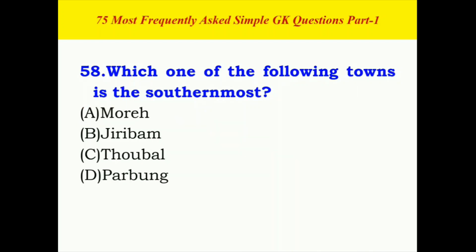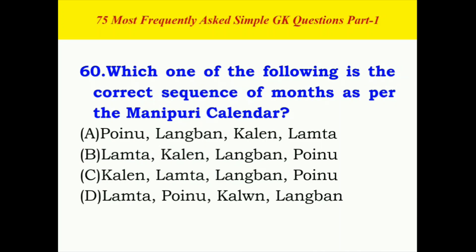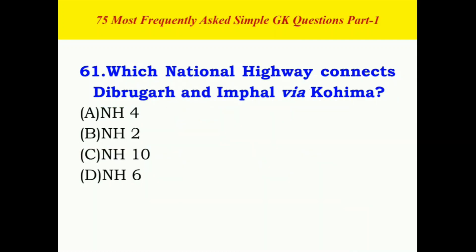Which one of the following towns is the southernmost? The correct answer is A. What is the geographical area of Manipur? The correct answer is C. Which one of the following is the correct sequence of months as per the Manipuri calendar? The correct answer is B. Which national highway connects Dibrugarh and Imphal via Kohima? The correct answer is B.